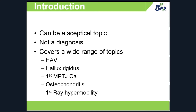When I was researching this presentation there wasn't a huge amount of good solid research on this topic, which I thought was quite interesting — I thought I was going to find loads but I didn't. Hallux limitus could cover a wide range of topics: hallux adductovalgus, hallux rigidus, osteoarthritis in the first MPJ, osteochondritis, first ray hypermobility, and loads more. We could actually do separate presentations on all of these in their own right, so this is quite a broad topic.